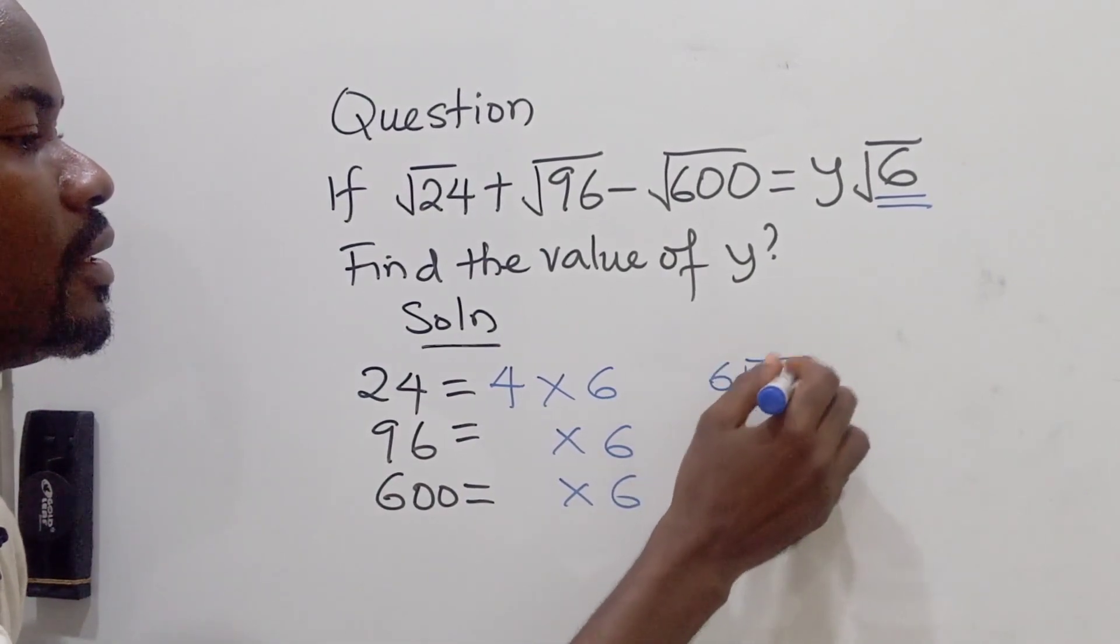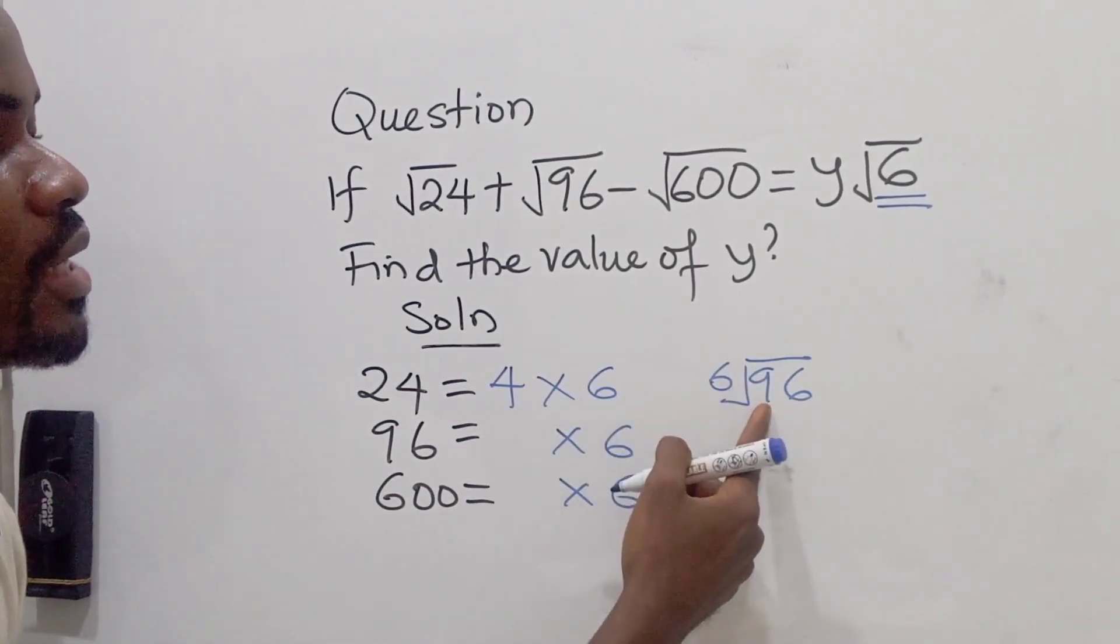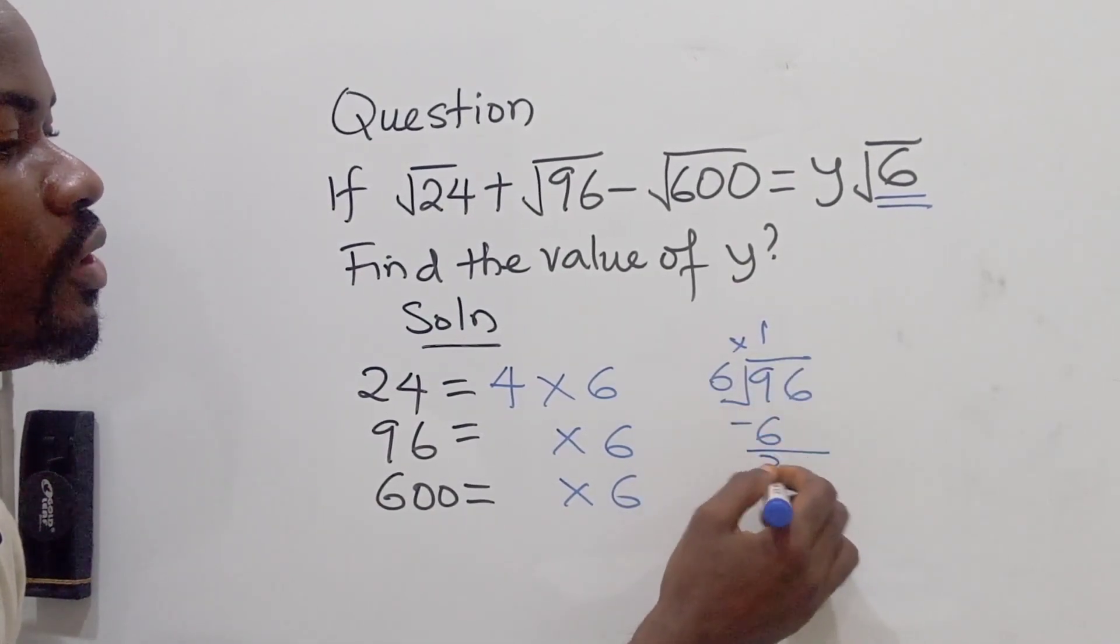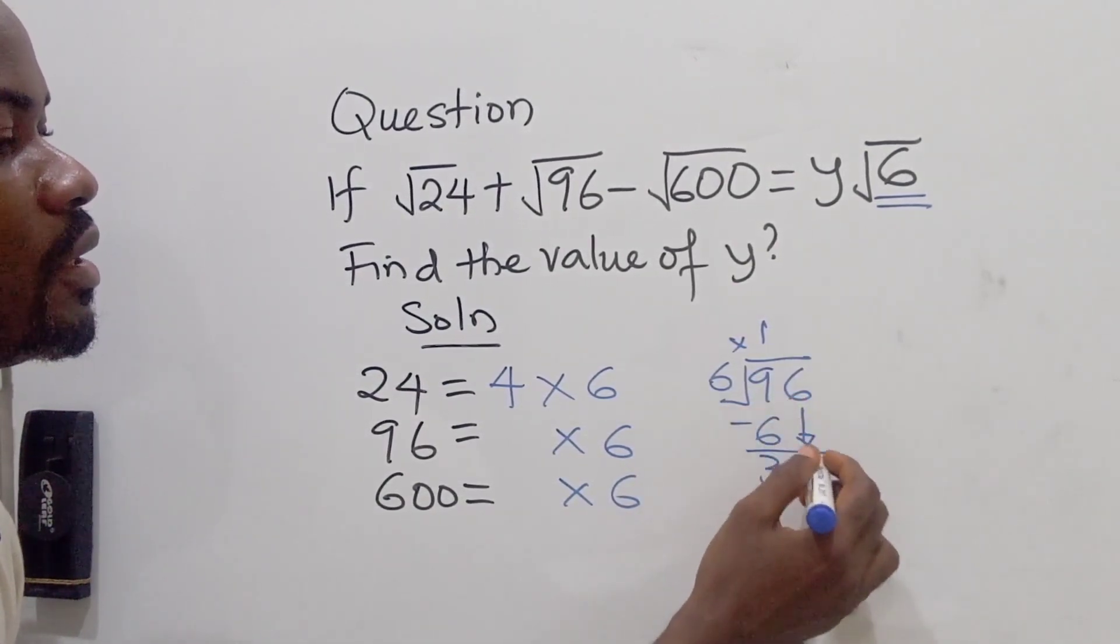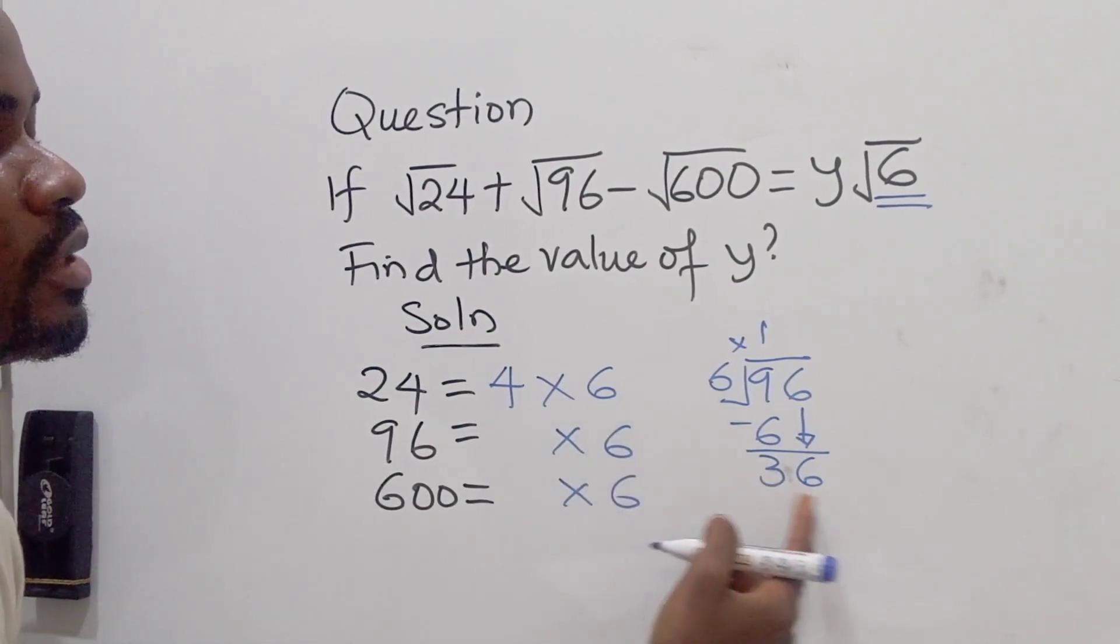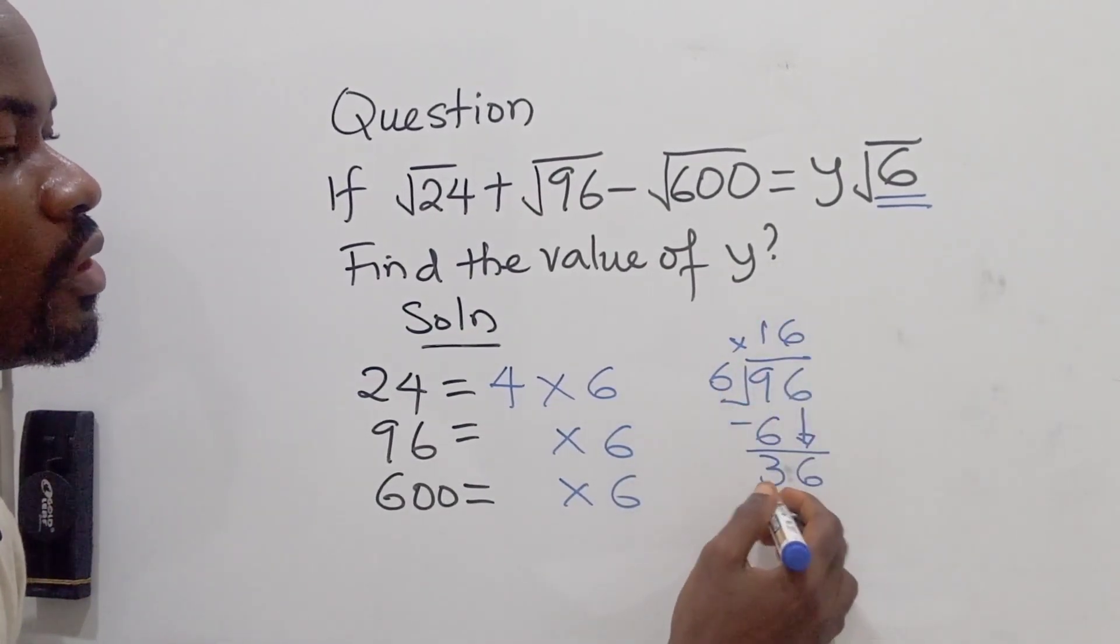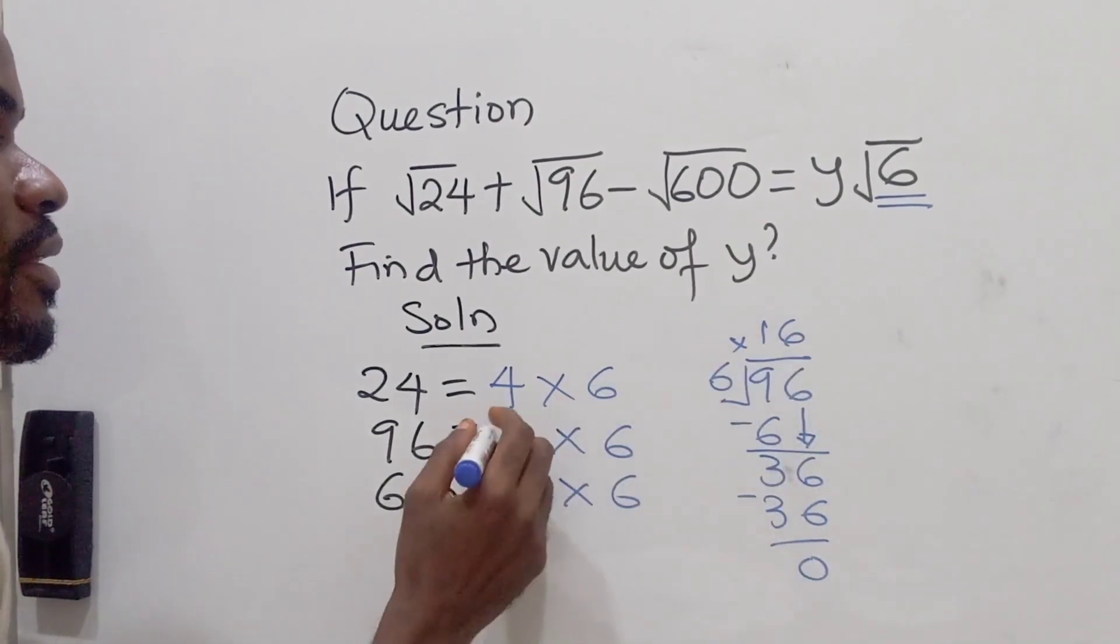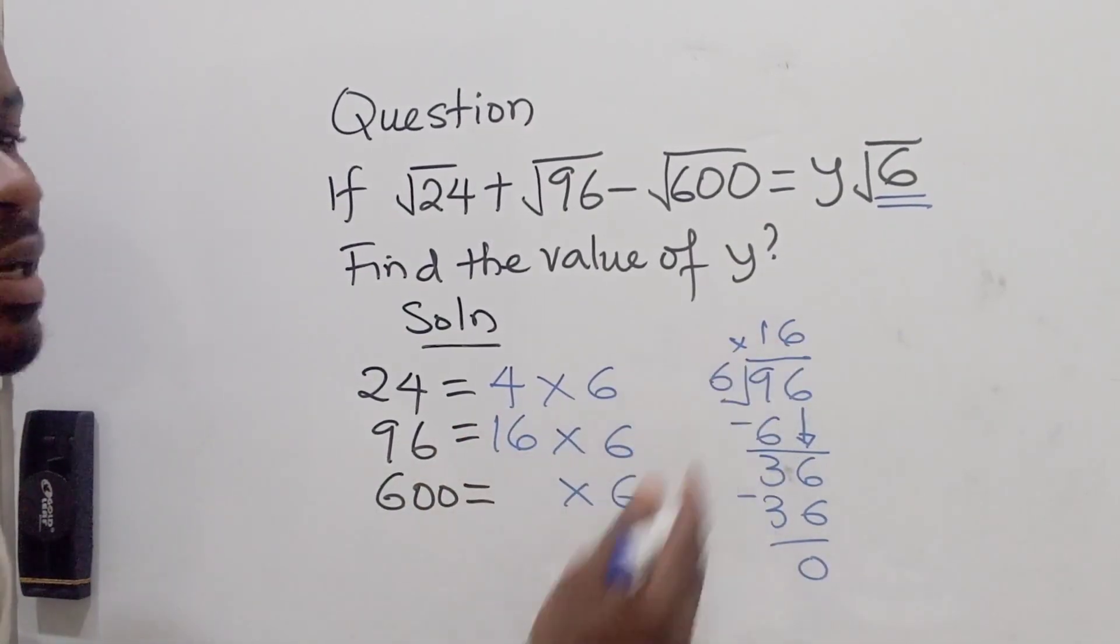So I have 6, 96. 6 into 9 is 1 times. We have 6, we'll subtract this 3. Bring down the 6. 6 into 36 is 6 times, which is 36. So we have 16 times. That's also another perfect square.